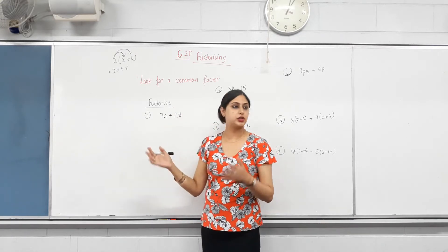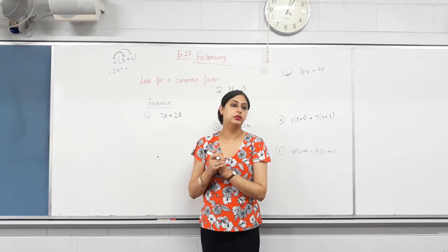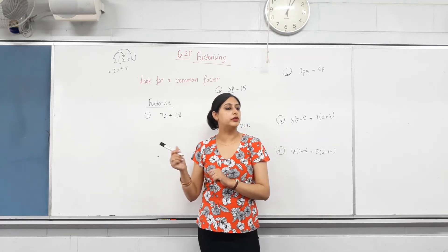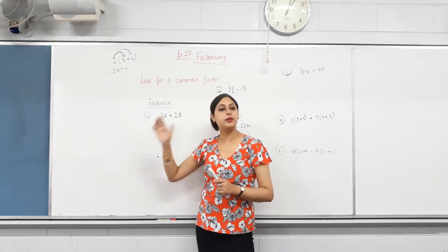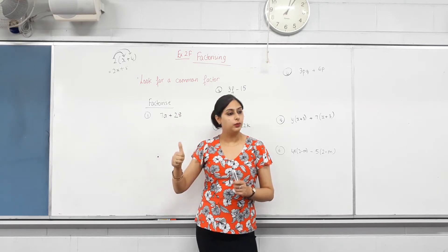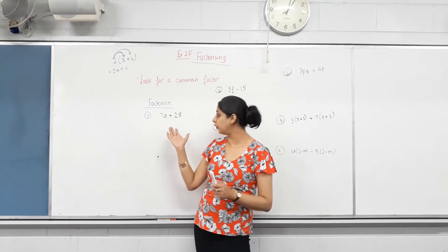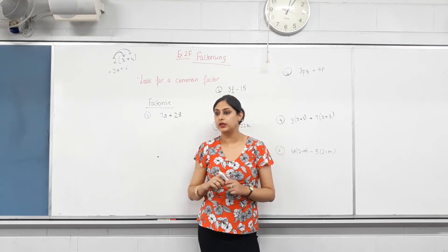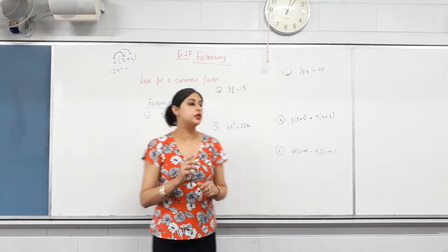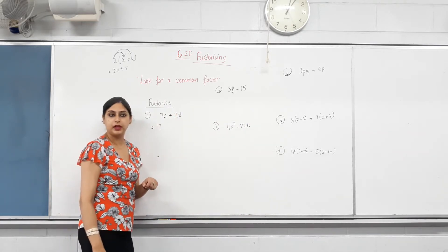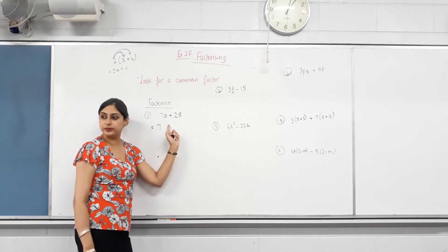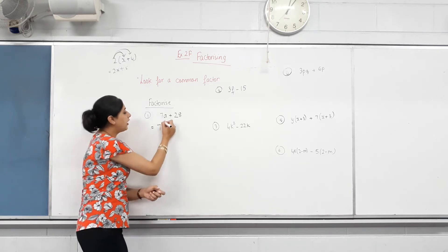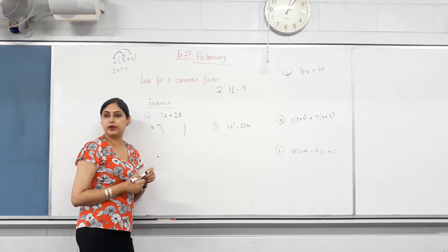Screens down, thank you. Let's look at 7a + 28 — there are two terms and there are letters as well. We deal with numbers first. The highest common factor of 7 and 28: factors of 7 are one and seven; factors of 28 are one, two, four, fourteen, and twenty-eight. So the highest common factor of 7 and 28 is 7. Now, the letter 'a' — is it common to both terms? We can't divide 28 by 'a', so it's not common to every term.